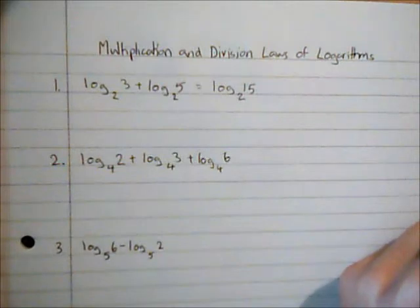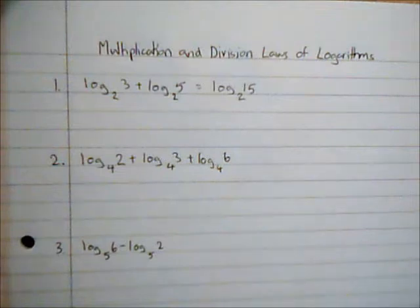If we think about logarithms and index forms as being linked together, what happens when we multiply two index numbers? Well we add the indices. So what happens when we add two logs? Well we multiply the numbers.